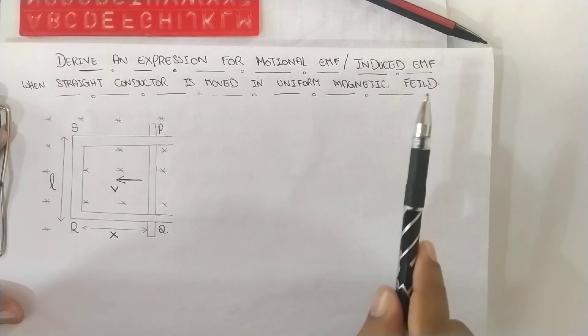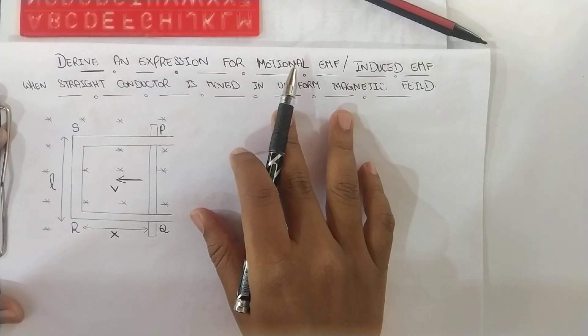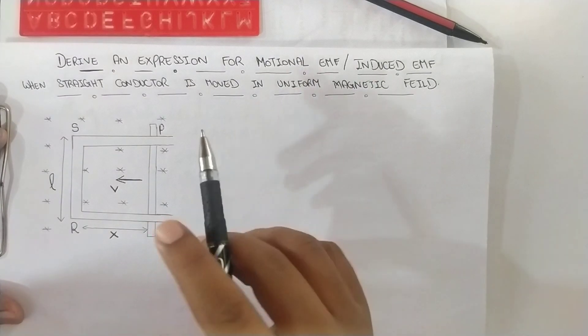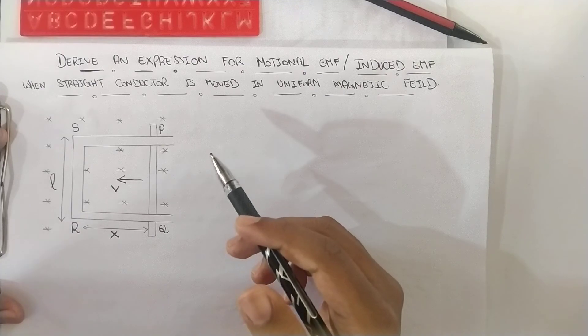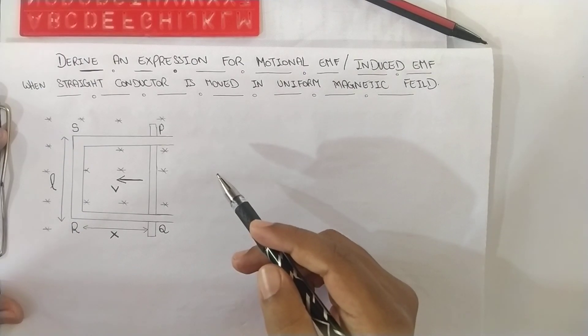Remember it is uniform magnetic field. And this particular derivation is from the chapter electromagnetic induction. You can follow our channel for watching more such important derivations which is in a playlist called class 12 physics.